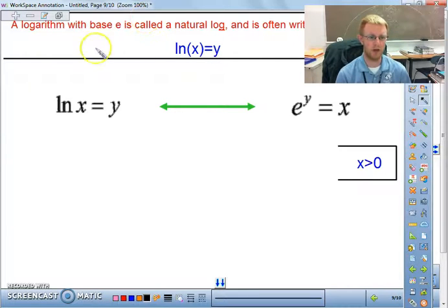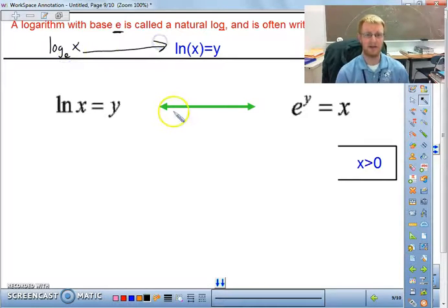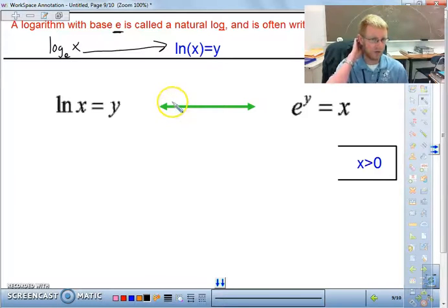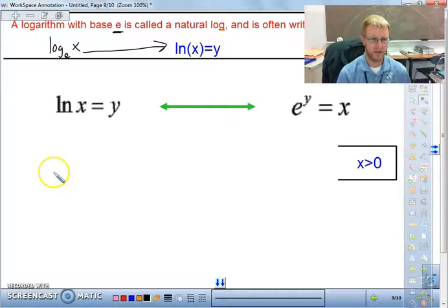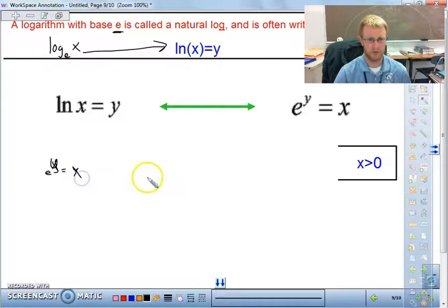So the last thing is we want to talk about a logarithm that has base e. So if we wrote it out as log base e of x, that is the exact same thing as saying ln of x. It's called the natural log. So you'll always see that written. So the important thing there is that we have e to the y equals x. I know that didn't write out very well, but e to the y equals x. Okay, same property. x has to be greater than zero.